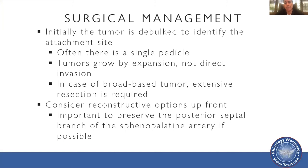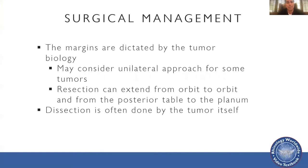Some tumors have broad-based attachments, and in these cases we need to do an extensive resection of the attachment point with oncologic margins. We also try and look at reconstructive options at the beginning — often with these tumors there is a separate flap on the contralateral side that can be available, so we always try and preserve the sphenopalatine artery if possible. The margins are dictated by the tumor biology. In certain cases, especially with sinonasal malignancies, you can do a unilateral craniofacial resection, with limits typically from orbit to orbit and from the posterior table to the planum.